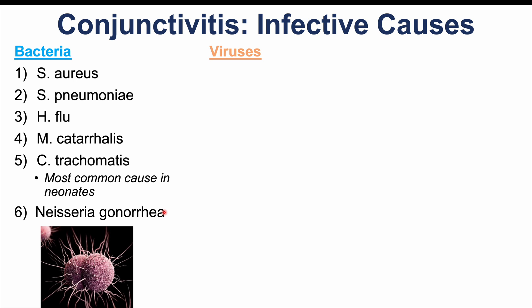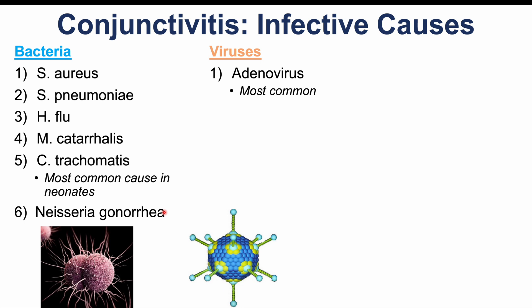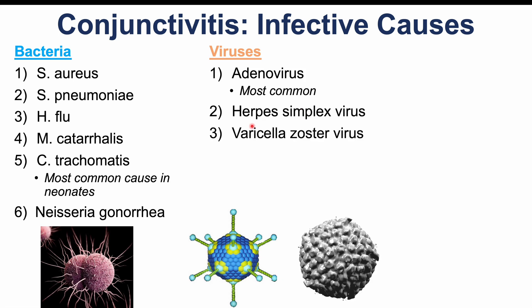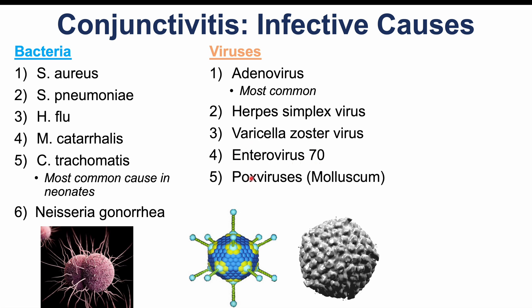Viruses that cause conjunctivitis include adenovirus, which is the most common cause of viral conjunctivitis. Herpes simplex virus and varicella zoster virus are also important causes. Less common viruses include enterovirus 70 and pox viruses like molluscum contagiosum virus. Other organisms such as fungi and protozoa can also infect the conjunctiva, though these won't be covered in this lesson.